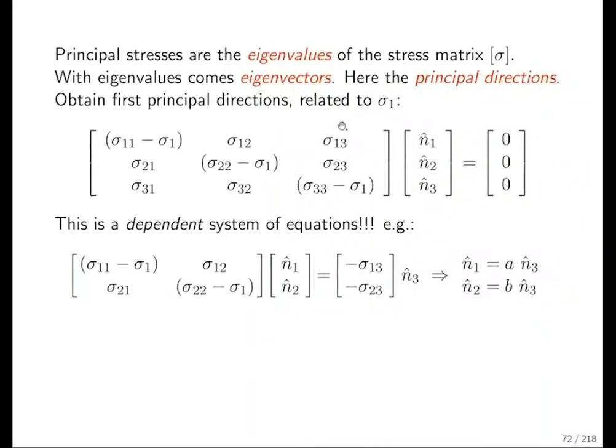Take the matrix from which we calculated the determinant before. This is the equation system which we want to solve. If you have a solution sigma 1, insert it here. Before it was sigma, now we choose sigma 1. Then we get n1, n2, n3 eigenvector components belonging to this one. How do you solve a system of equations?